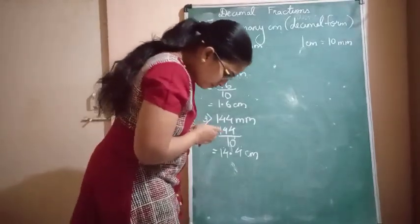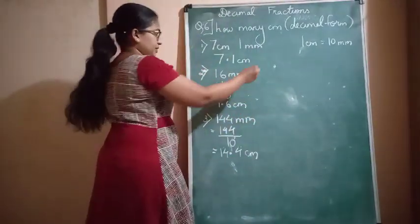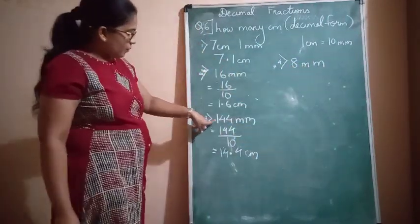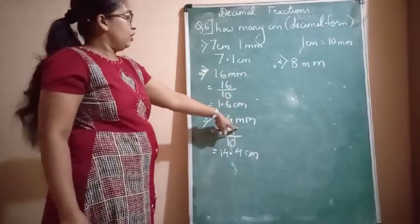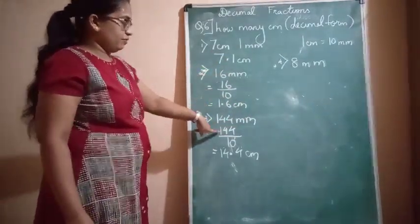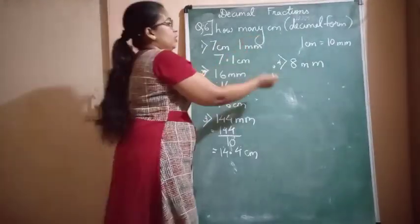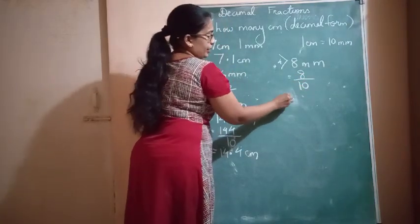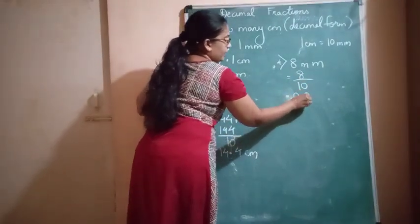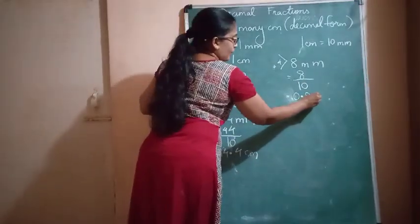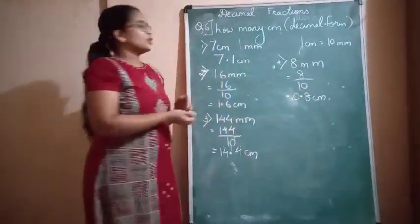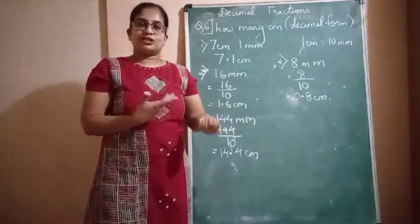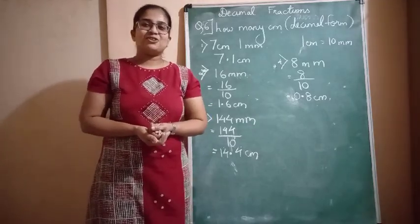The last question is 8 mm. Unlike previous millimeter-only questions which were greater than 10, this is less than 10. The method remains the same: divide by 10 — 8 upon 10 — which gives 0.8 centimeters. I hope you have understood this part of decimal fractions. We will continue with this chapter in our next lecture. Thank you so much.